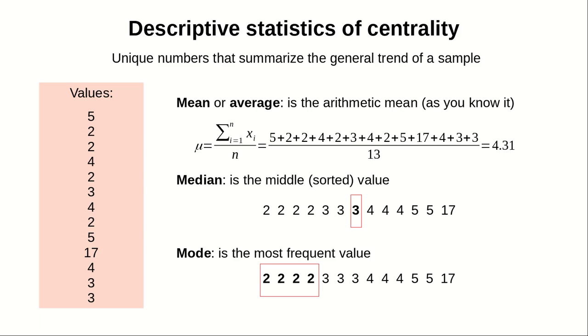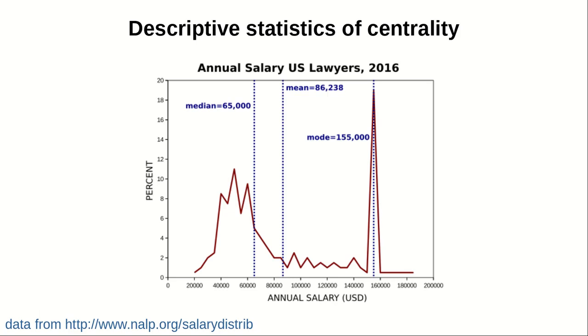So for instance, in this graph here, you can observe the salary of US lawyers, the annual salary. If you plot the distribution and then you find out the mean, the median, and the mode, you will find that the three are very different, but it tells you different things.